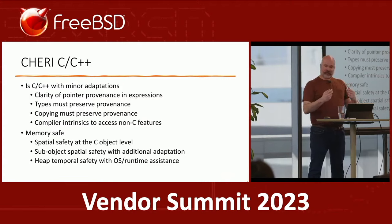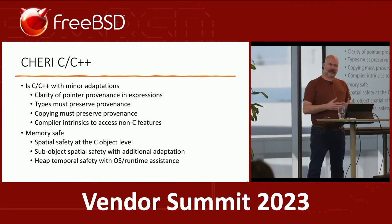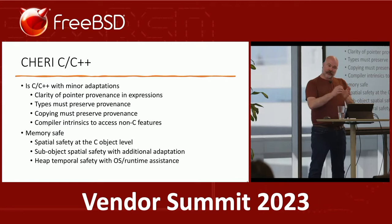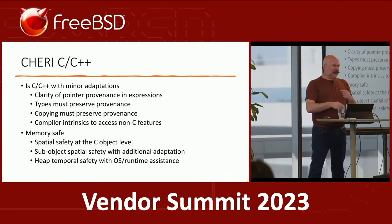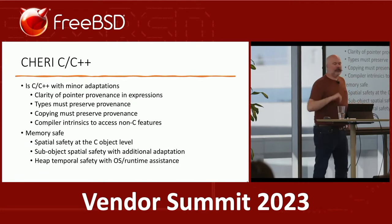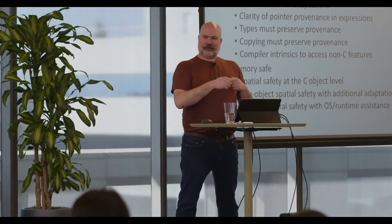Heap temporal safety is implemented with a combination of the OS and runtime. The key observation is that a capability has a base address that you can only move upward, so you can always tell what allocation range a capability came from. Because of the tags you can always identify what is a capability — unlike in a traditional garbage collection system where you could XOR a pointer to hide it. We can therefore perform a reasonably efficient scan of all memory and revoke all pointers to deallocated regions.